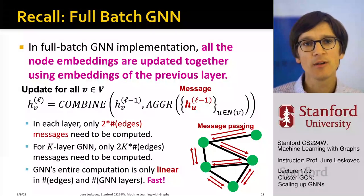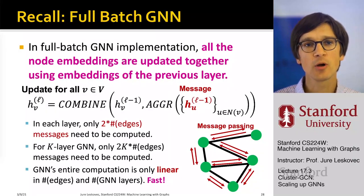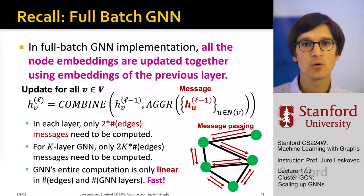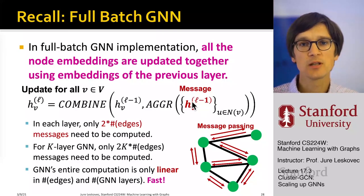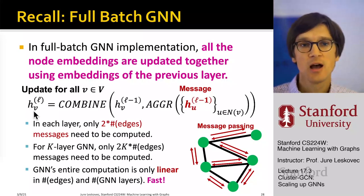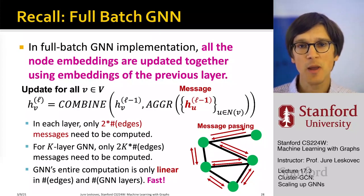The way we motivate Cluster GCN is to remember what a full-batch graph neural network is. A full-batch GNN is where all the embeddings for all nodes are computed together in a single pass. Embeddings of all nodes are computed for layer 1, then layer 2, and so on. You need the embeddings of all nodes at layer L minus 1 to compute embeddings for all nodes at layer L. This means that in each layer, two times the number of edges worth of messages need to be exchanged, because every node collects messages from its neighbors — two messages along each undirected edge.